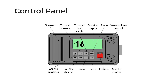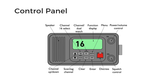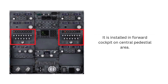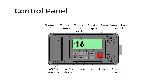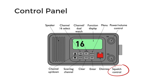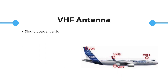The control panel displays and allows the tuning of the VHF frequencies. It is installed in the forward cockpit on the central pedestal area. Frequency control is achieved by the concentric knob, which increments the frequency on rotating clockwise and decrements on rotating anticlockwise. The volume control uses a potentiometer to allow variable attenuation of the audio. The squelch control disables the receiver output when two signals are being used to prevent noise between the ground transmission, and the mode selector switch provides the selection of different modes.